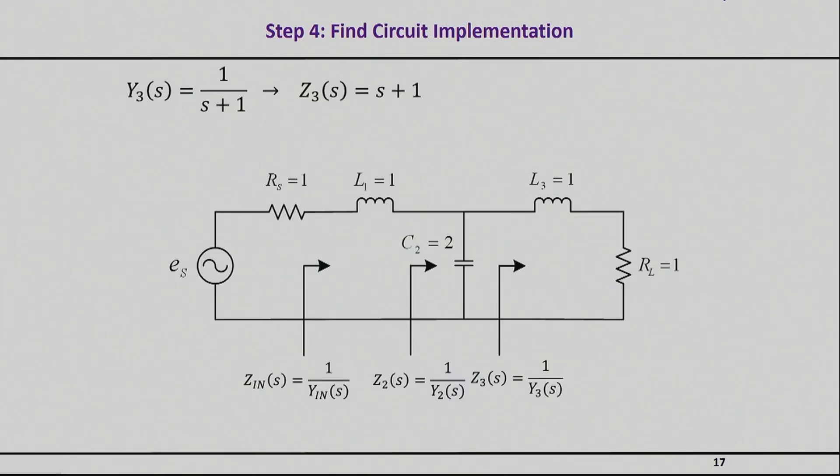So indeed, here's basically the final network realization. I implemented this last part of Z3 with basically my series inductance that implements this one, and my load, which will actually implement this one right here. So I have now successfully started from a required impedance of Z input as a function of S, and I have synthesized the network that at least in the normalized domain, where again, all impedances are actually equal to 1 for source and load, and my omega is equal to 1, basically satisfies all the requirements that I want.